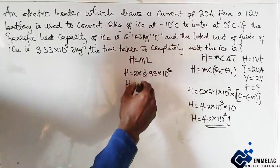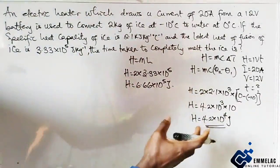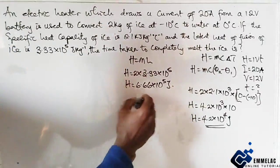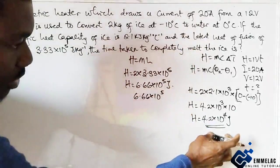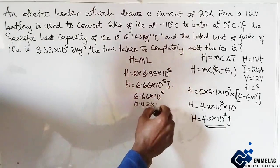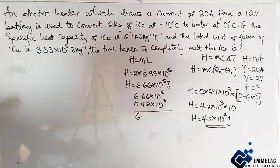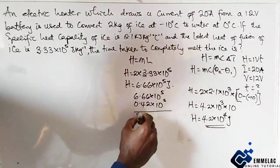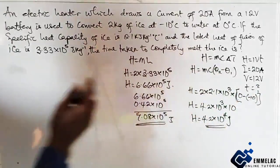We have 6.66 times 10 raised to power 5 joules. The total heat gain now will be the addition of these two. The total heat will be 6.66 times 10 raised to power 5. Now converting this to 10 raised to power 5, we have 0.42 times 10 raised to power 5. So now we have 7.08 times 10 raised to power 5 joules.